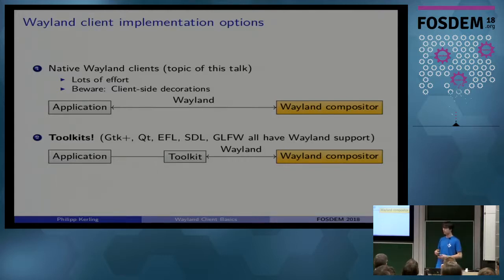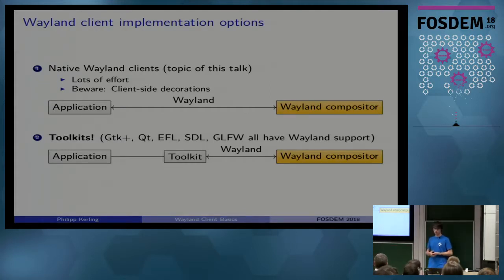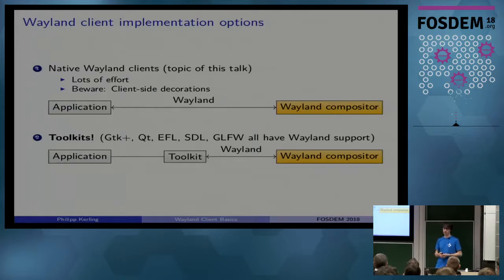My recommendation in all cases, if it's at all possible, is that you should be using toolkits — that's the second option. GTK, Qt, EFL, SDL, and GLFW all have quite good Wayland support, and you just have to do a lot less effort. The toolkits do all the heavy lifting for you, and you also get the benefit that your application will run on a lot of other platforms, including X11. If you're doing a native Wayland application with no fallback, your application will just not run on X11.